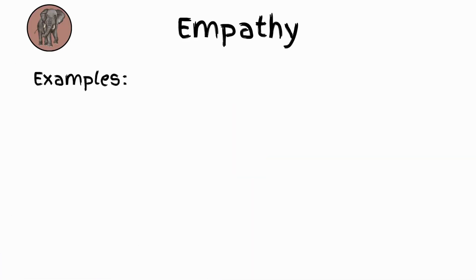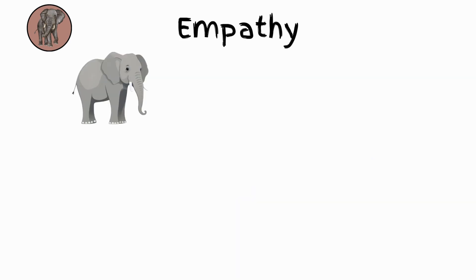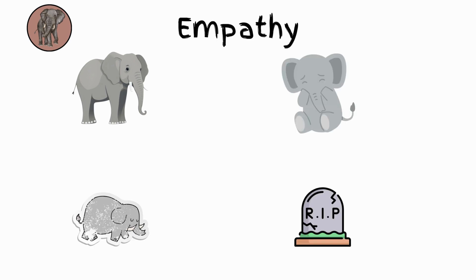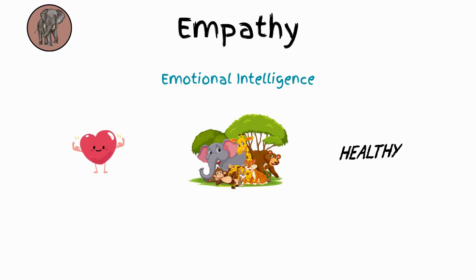Empathy. Examples: elephants. Some animals show empathy, meaning they can understand and respond to others' emotions. Elephants often comfort a distressed friend or even mourn their dead. This emotional intelligence is important for building strong social bonds and keeping their groups healthy.